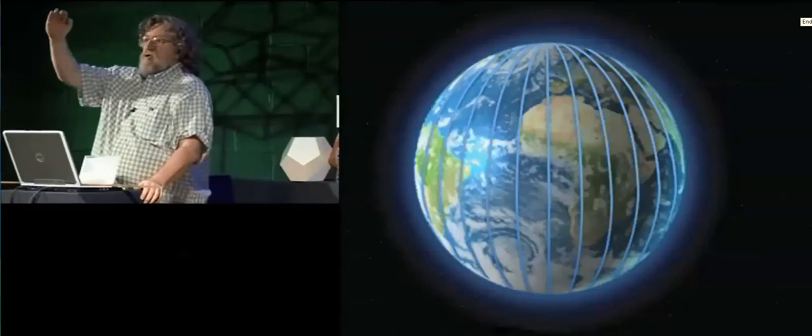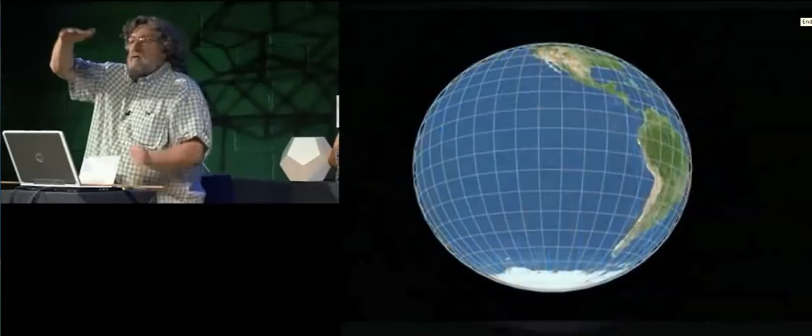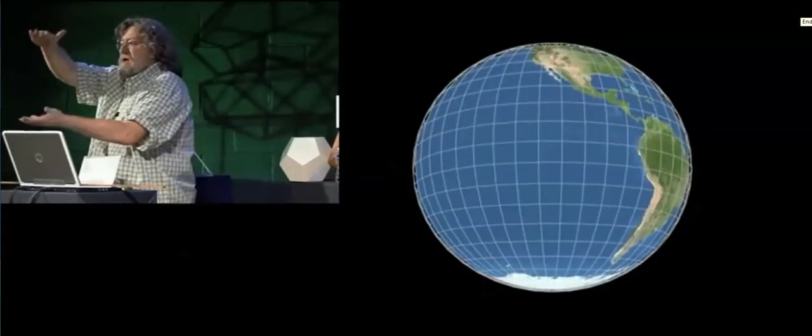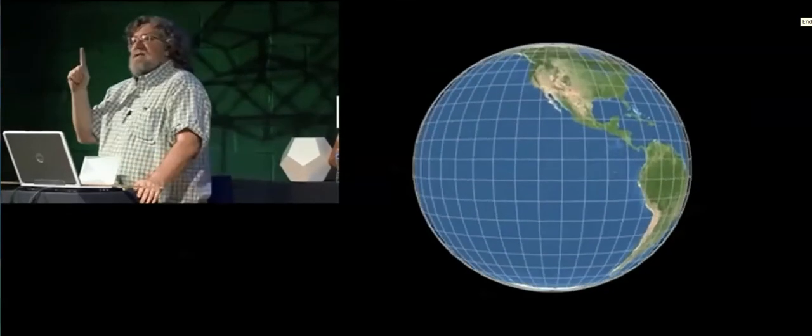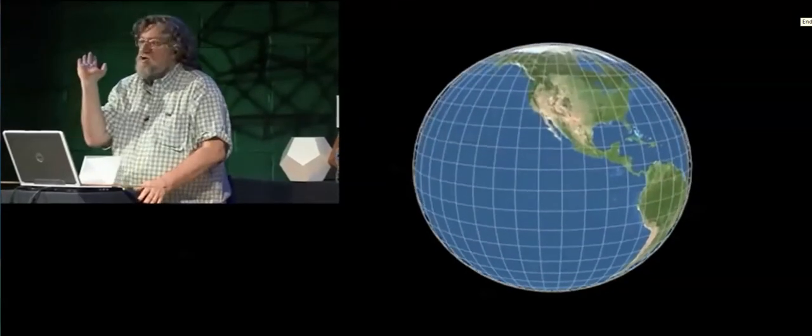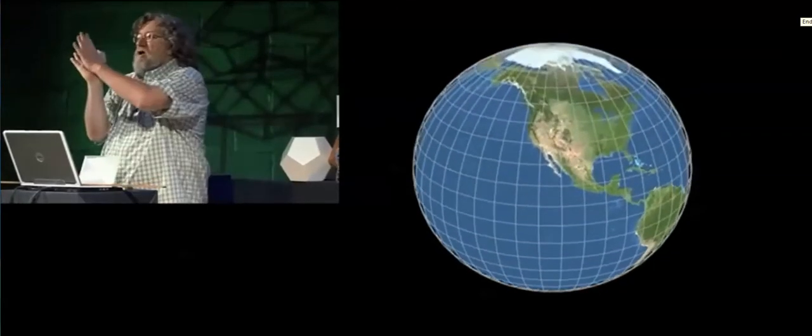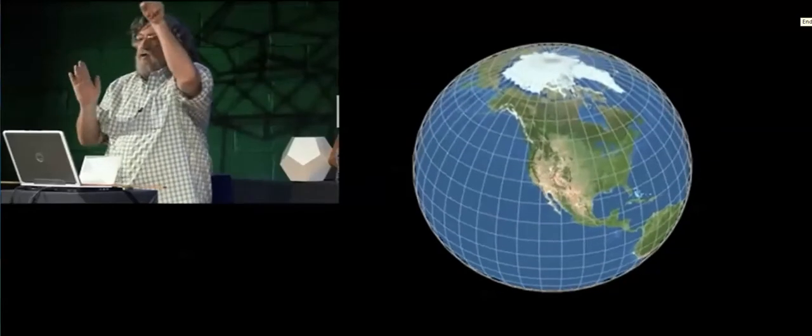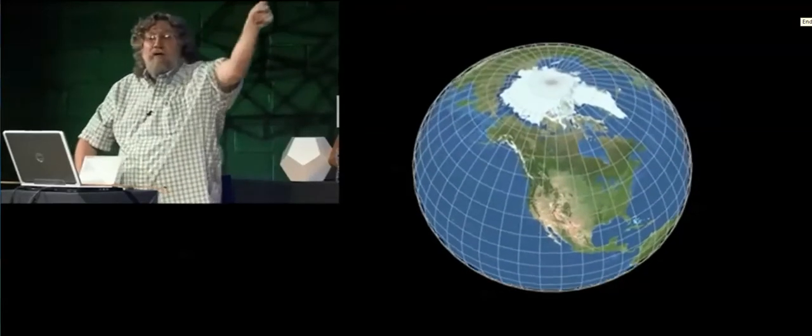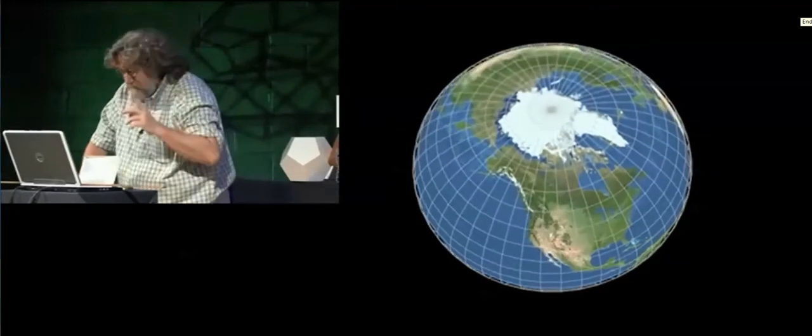As you're moving towards the North Pole, the Earth is actually flattening out, the Earth's radius is shrinking. What that means is that to traverse a degree of arc, you have to travel further as you get away from the equator towards the North Pole.